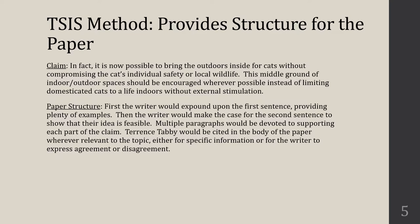One thing the They Say, I Say method does is provide structure for the paper. The paper structure kind of comes from the claim. The writer would first expound on examples of how these contraptions allow cats to be outside with protection, then make the case showing their idea is feasible. The scholarly source would be cited in the body of the paper wherever relevant — either for specific information or for the writer to express agreement or disagreement. Your source appears in the They Say and then in relevant body paragraphs.